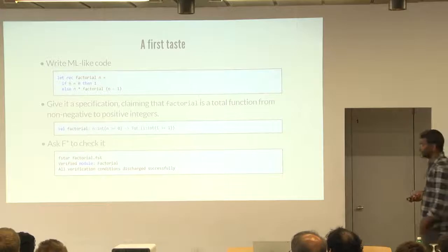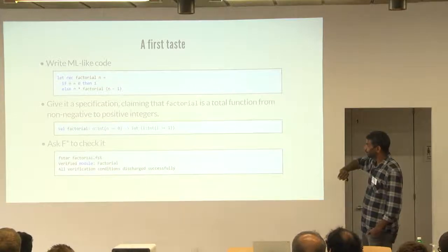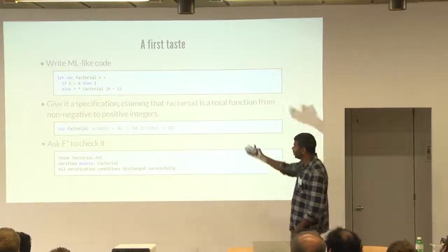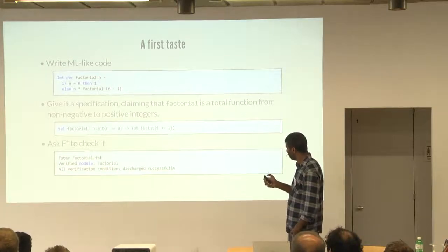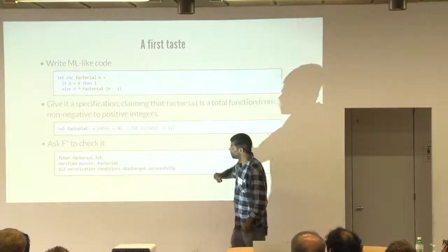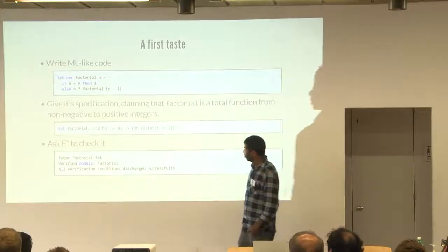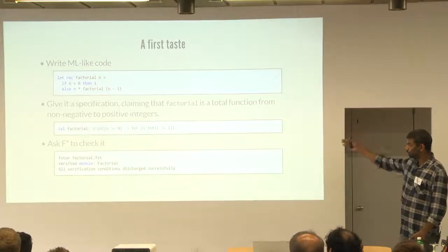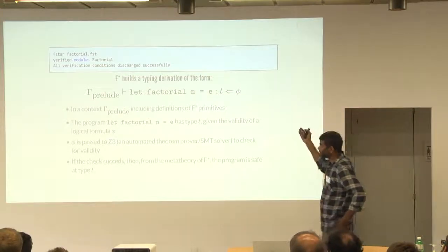So to give you a taste of what F-star looks like, you know, at a very simple level, you write syntax that looks like OCaml. You can write a specification for your programs that's richer than the types that you can give to OCaml programs. So here's an implementation of factorial. And you can give factorial a specification that says, factorial takes non-negative numbers. It's a total function that returns positive numbers. And you can present the factorial program and its specification to F-star. It will generate a verification condition and feed that verification condition to Z3.